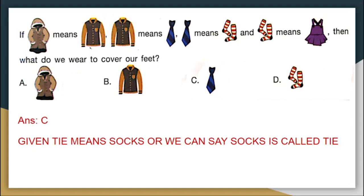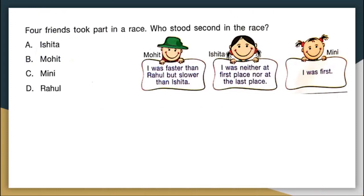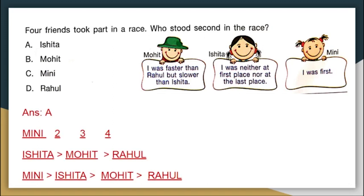Moving on. Four friends took part in a race. Who stood second in the race? There is some information given to us. Mohit says that I was faster than Rahul but slower than Ishita. Ishita says that I was never at the first place nor at the last place. Mini says that I was at the first place. We have four people here and Mini is already saying she came first. So if you look at the positions — first, second, third, fourth — we know for sure that Mini is in position one. We are asked to find out who is coming second, so definitely option C is not the right answer.